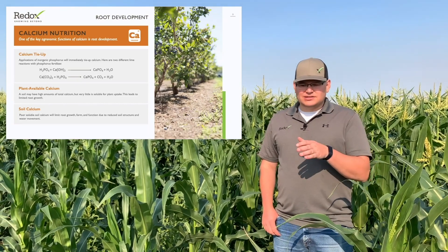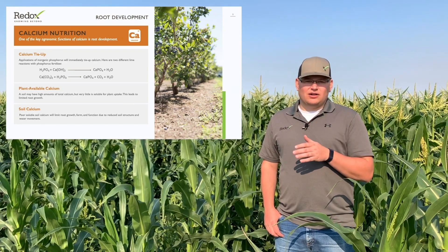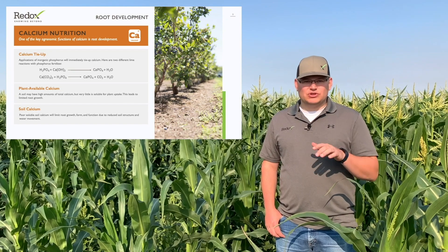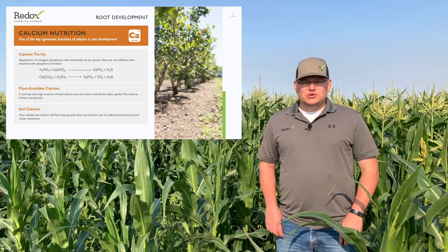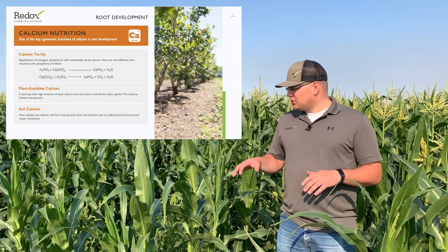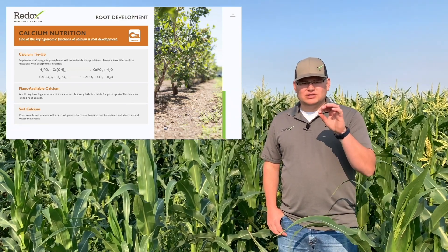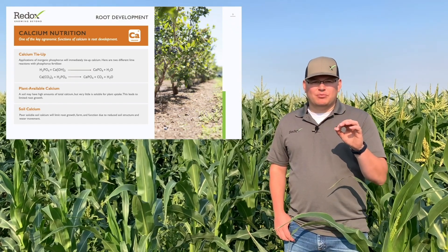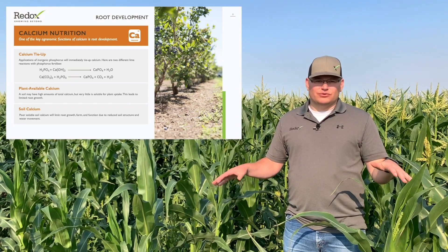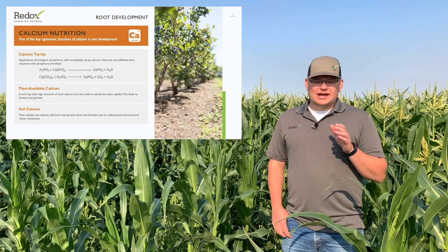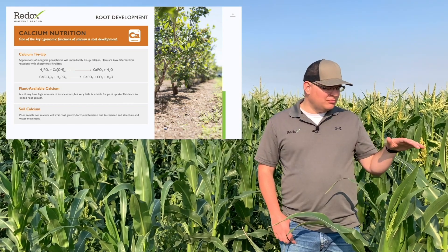With calcium nutrition, we're focusing on the same things. Since calcium is divalent as well, we need something that's protected — not going to tie up with the nutrition already in the soil — and also highly efficient getting into the plant. Calcium is needed for plant structure, not only late season but early season too. Calcium is on the root tip, or root cap, which helps the plant push through the soil and get a nice foundation of roots. Later season, calcium goes to building structure for the plants.